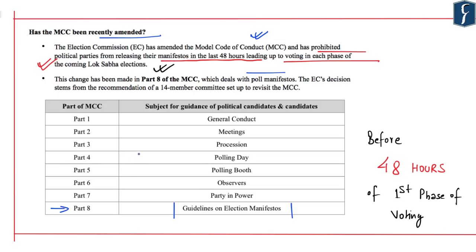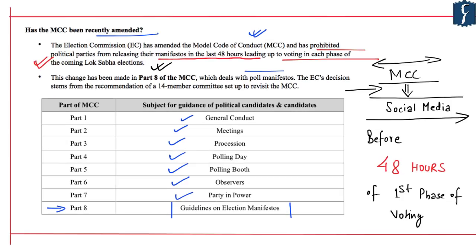The Model Code of Conduct is comprised of eight parts governing different aspects of elections: Part 1 — General Conduct; Part 2 — Meetings; Part 3 — Processions; Part 4 — Polling Day; Part 5 — Polling Booth; Part 6 — Observers; Part 7 — Party in Power; and Part 8 — Guidelines on Election Manifesto. Another important point is that observance of the MCC also applies to social media — the government in power cannot use social media to further political objectives after the MCC comes into effect.